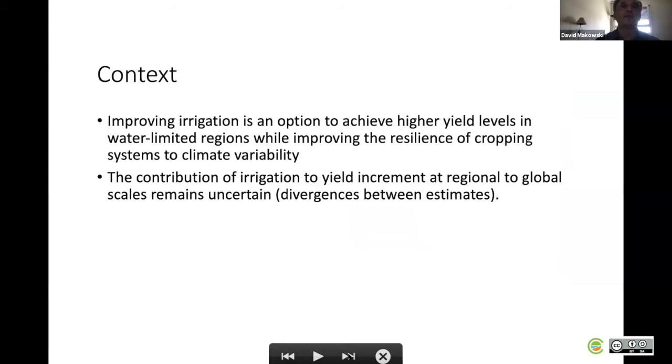This defines the context of our study. Improving irrigation is seen as an option to achieve higher yield levels in water-limited regions while improving the resilience of cropping systems to climate variability.